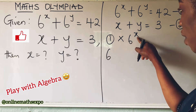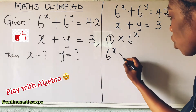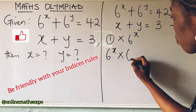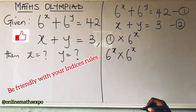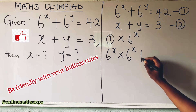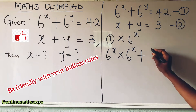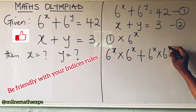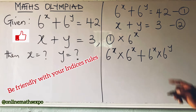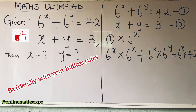So we multiply each term: 6 to the power of x multiplies 6 to the power of x, then bring down the positive sign, and 6 to the power of x multiplies 6 to the power of y, all equal to 42 multiplied by 6 to the power of x.